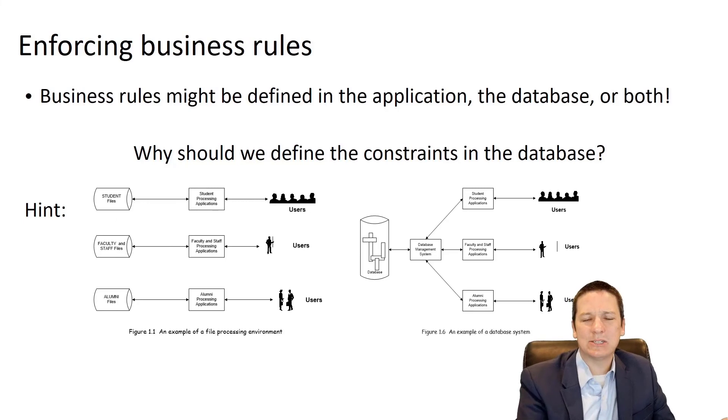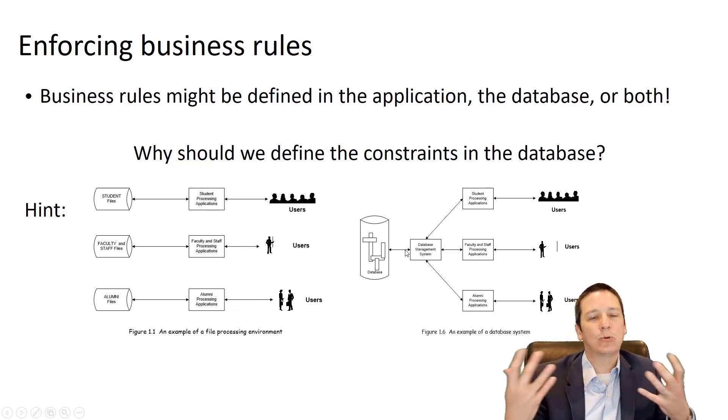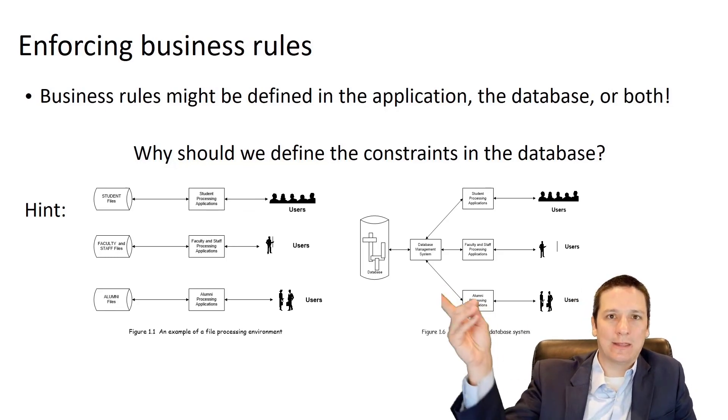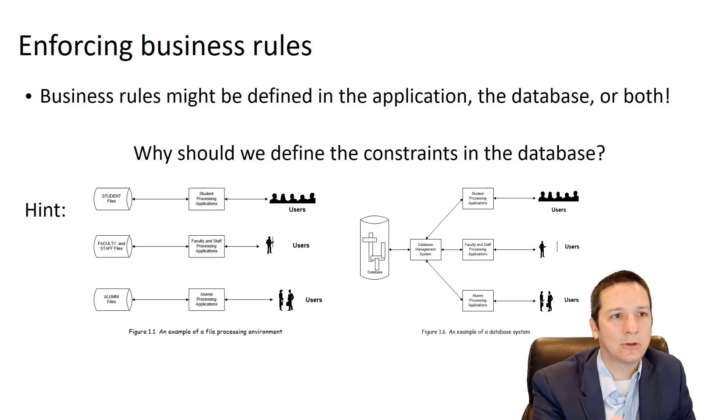Now, on the other hand, if we had implemented that business rule at the DBMS layer, any application that's connecting to this database is going to have that business rule automatically enforced. The database is going to throw an error message if you try to enroll for two classes at the same time and kick that error back up to the application. So just gives us a little bit more control and a little bit more data integrity, which is always a good thing.